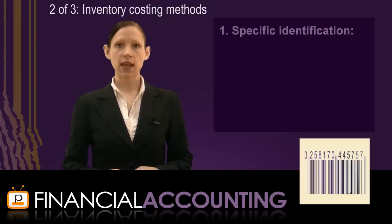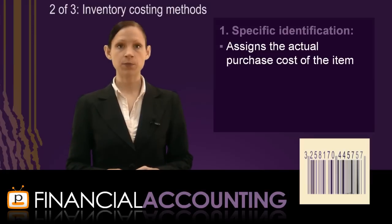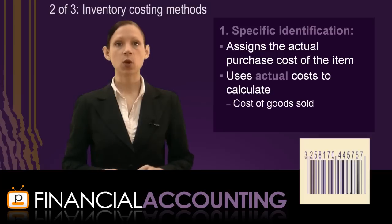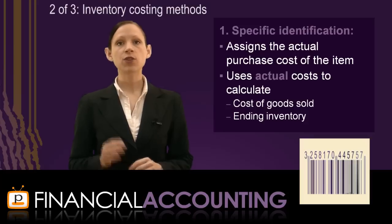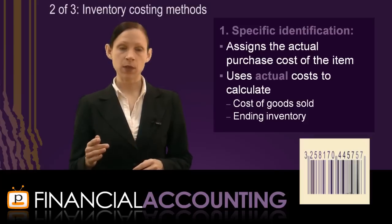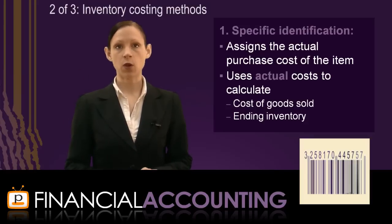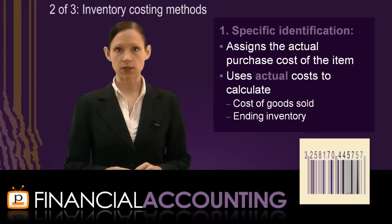The specific identification method assigns the actual purchase cost to each item of inventory held by the business and uses this actual cost to calculate cost of goods sold and ending inventory. While this method traces actual costs through inventory, the remaining three methods all make an assumption about the flow of costs through inventory to cost of goods sold, so are known as inventory cost flow assumptions.